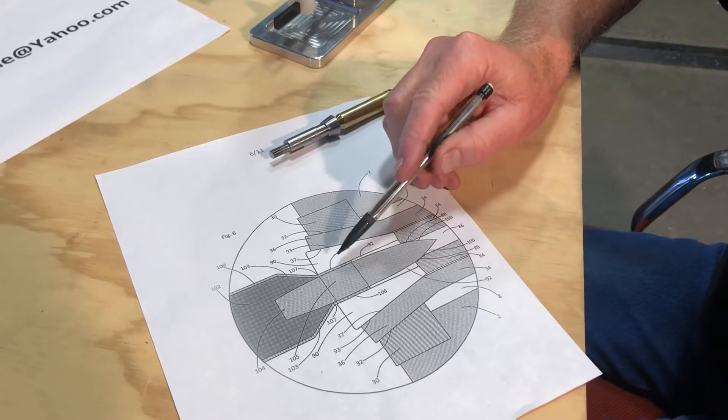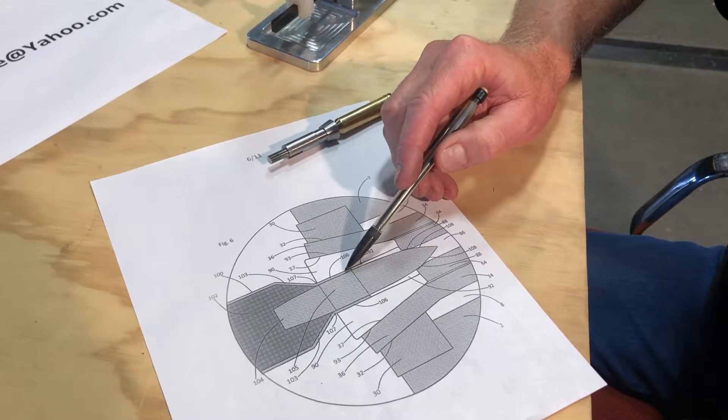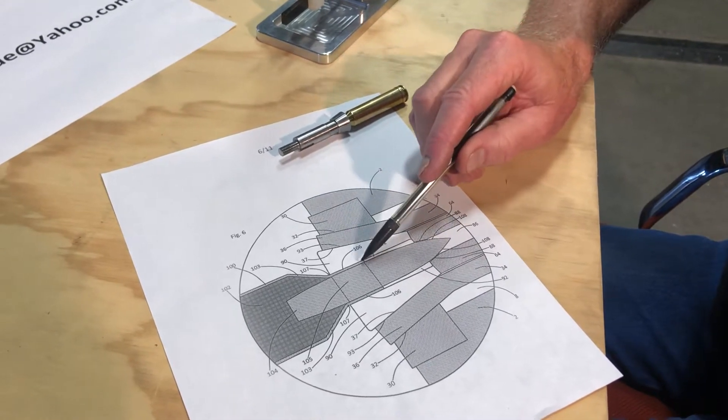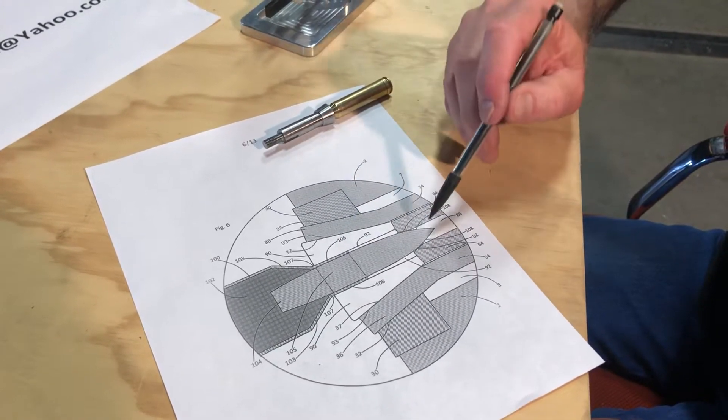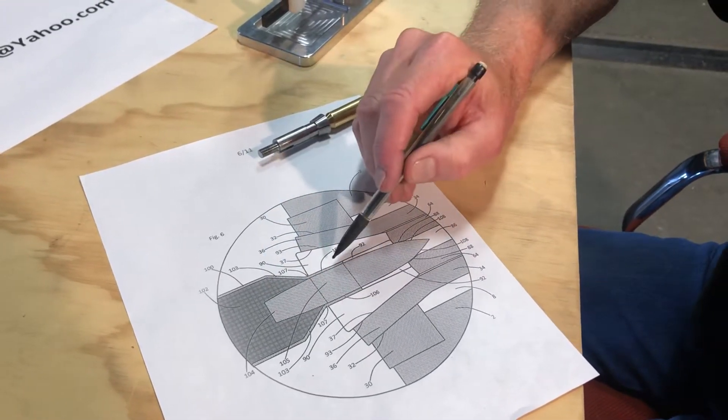When you tighten down the drawbar, it clamps back here on the neck of the cartridge, turned neck, making the center of this bullet concentric with the neck.